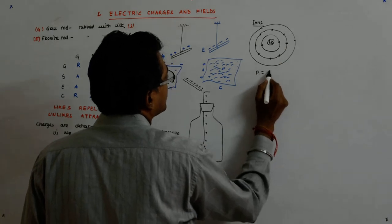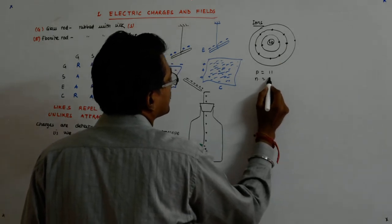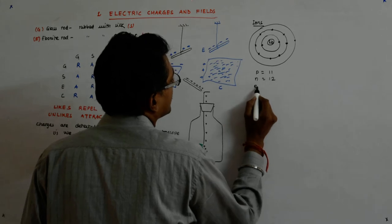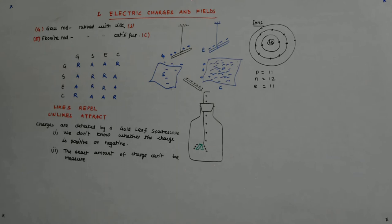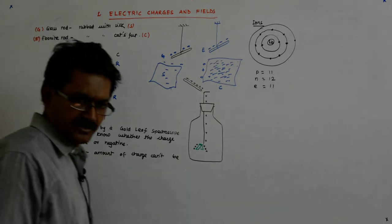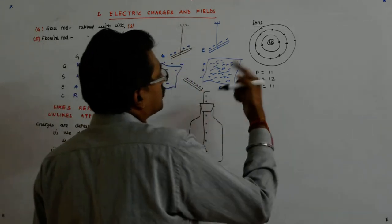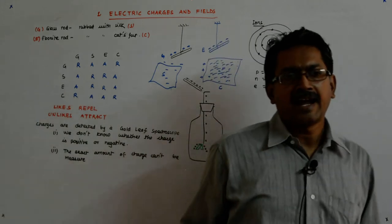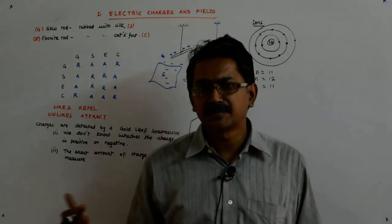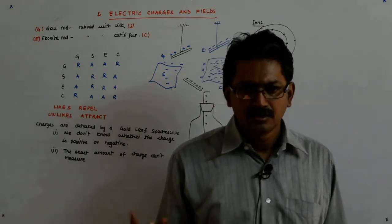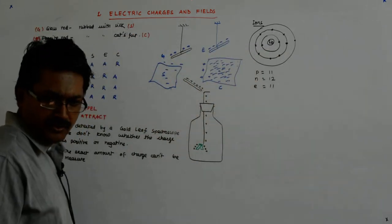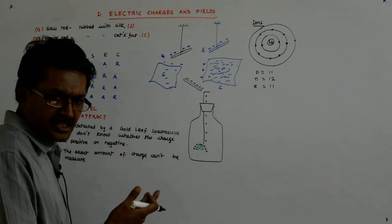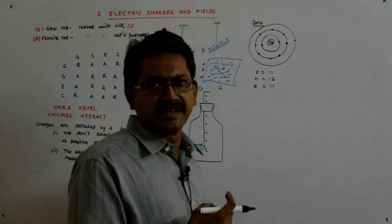Proton is 11, neutron is 12, electron is 11, atomic mass is 23. This is what we know. How can something become negatively charged? It is only the transfer of electrons into it. If you want to make this negatively charged, it will be difficult, but still, if you want to make something negatively charged, what do you do?